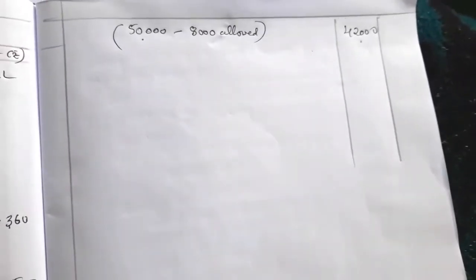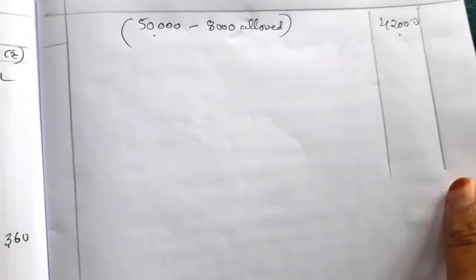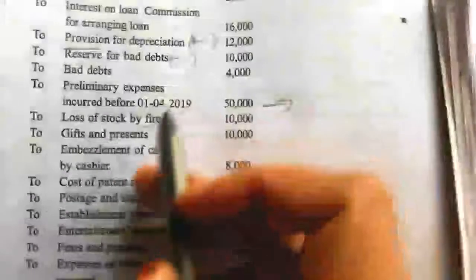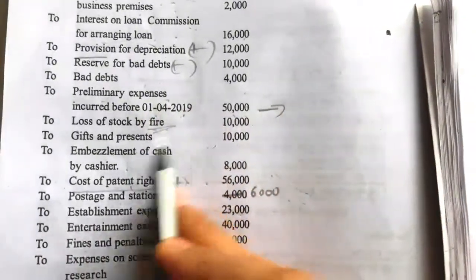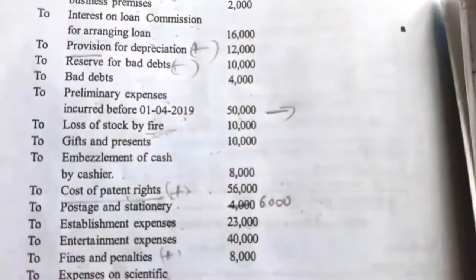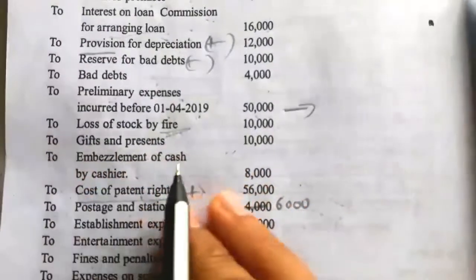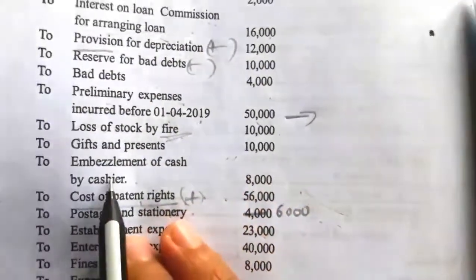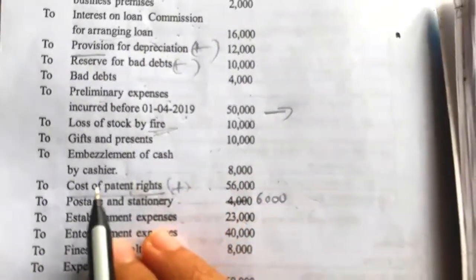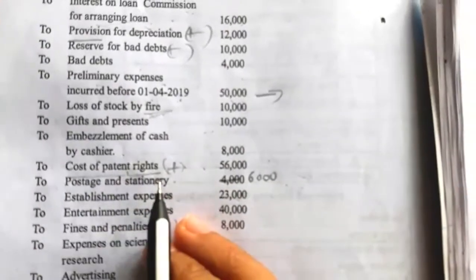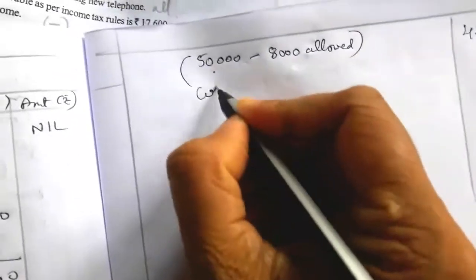Loss of stock by fire — allowed. Gift and presents — no additional information given, so assumed to be given to employees — allowed. Embezzlement of cash by cashier — allowed. Cost of patent rights — disallowed.